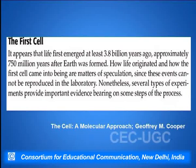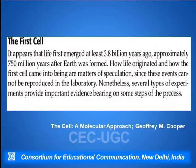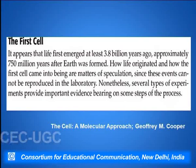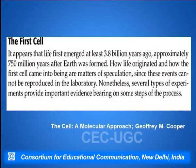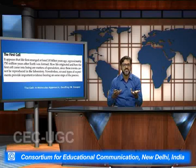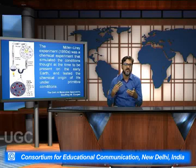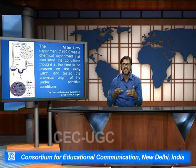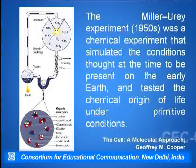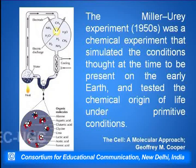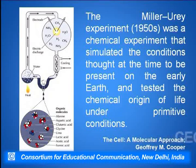Scientists were not clear how exactly life originated and how the first cell came into the picture, because it is said that the primitive environment was a very reducing kind of environment with a low content of oxygen. Various scientists started working on this and one of the classical experiments which proved how in the reducing kind of environment these first cells started developing was the Miller-Urey experiment.